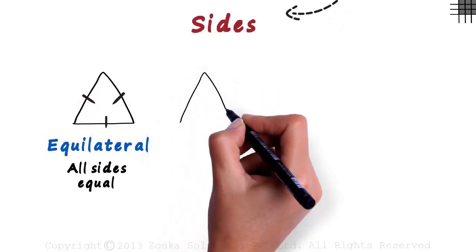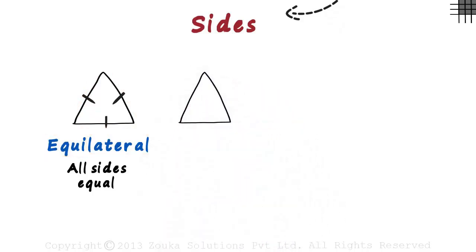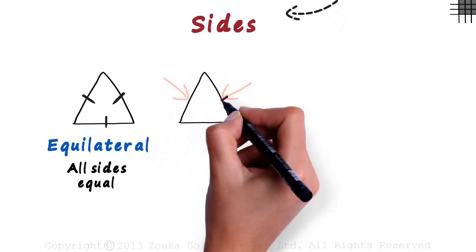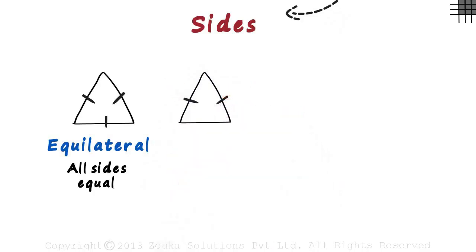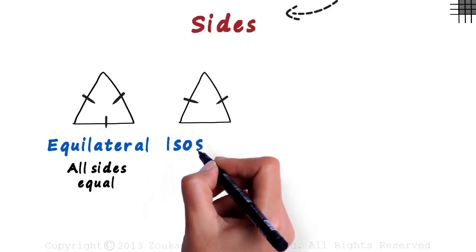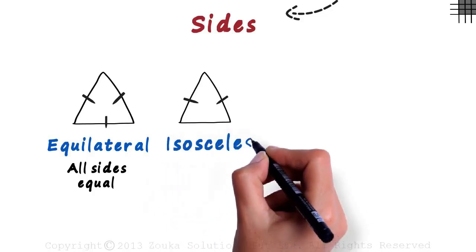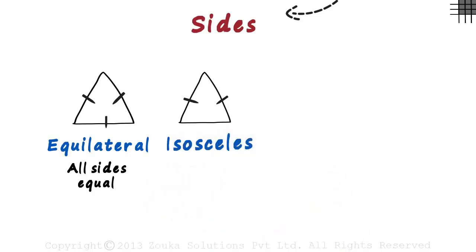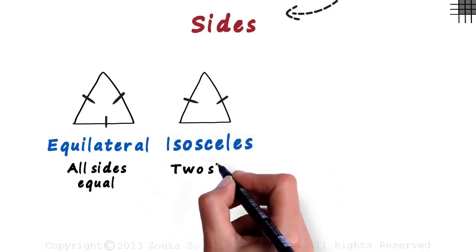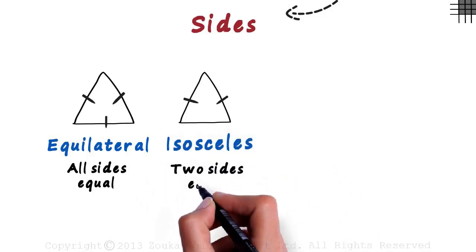The other kind of triangle is a triangle which has two sides equal. Say these two sides. Such triangles are called isosceles triangles. Any two of the three sides can be equal.